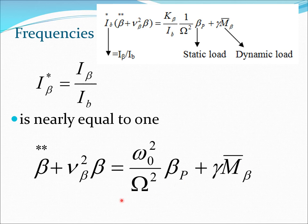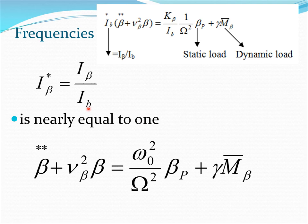In most practical cases, I_beta-star (which is I_beta divided by I_b) is nearly equal to one, because e is very small. In that case the equation simplifies considerably. We can clearly identify an inertia term, a stiffness term, a static load term from pre-cone, and a dynamic forcing term from the aerodynamic forces.